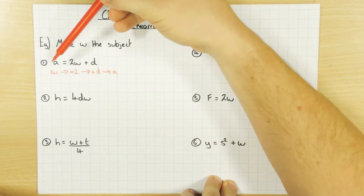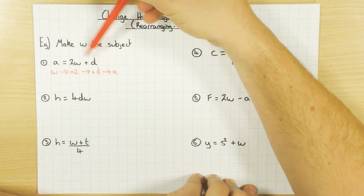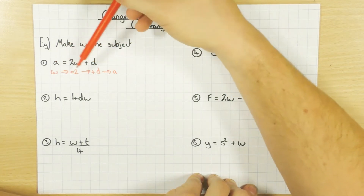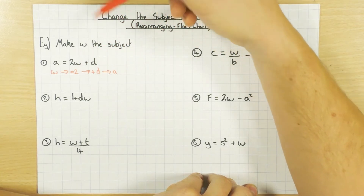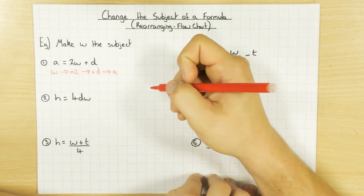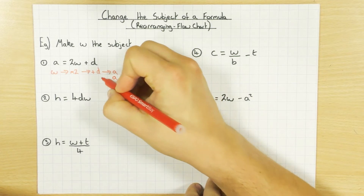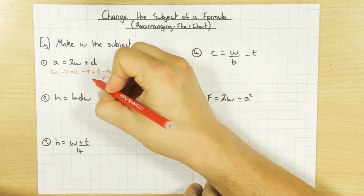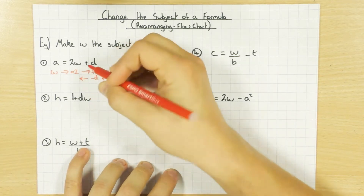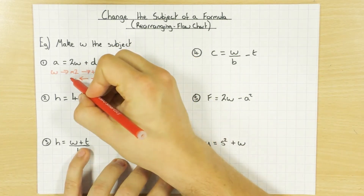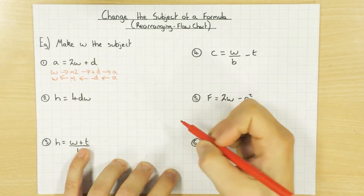So that's the first bit of the flowchart: I've got W, I times it by two, I add D and I get A. If this doesn't make any sense, have a look at solving equations when I use the flowchart and that should obviously help you. Then all I do is go backwards — I go to A and do the opposite. So instead of adding D, I minus D. Instead of times-ing by two, I divide by two, and I get back to W.